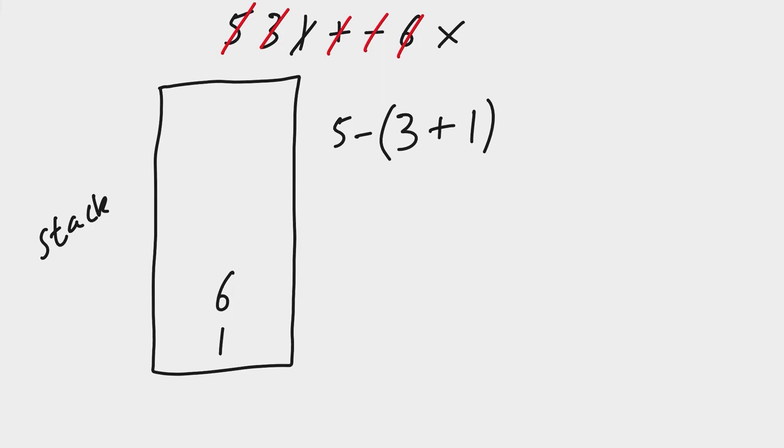Perform that evaluation. So we've got the one, which is this expression here. We multiply it by the six. So again we need to pop these values off here.